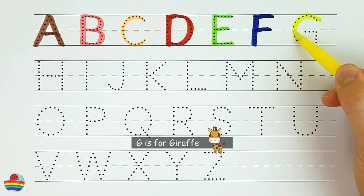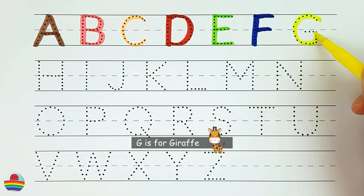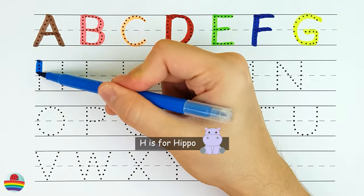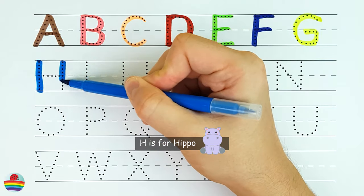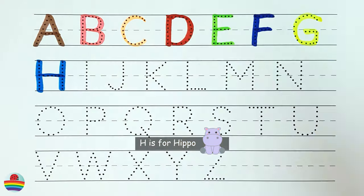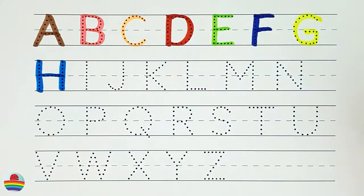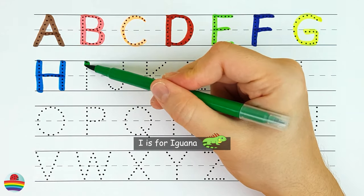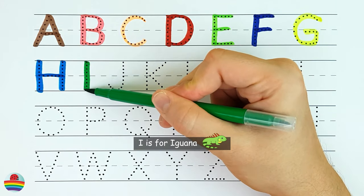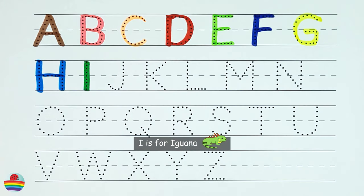G. G is for giraffe G. H. H is for hippo H. I. I is for iguana I.